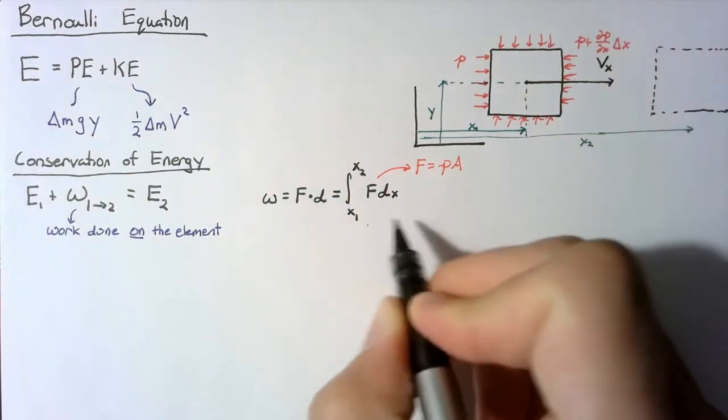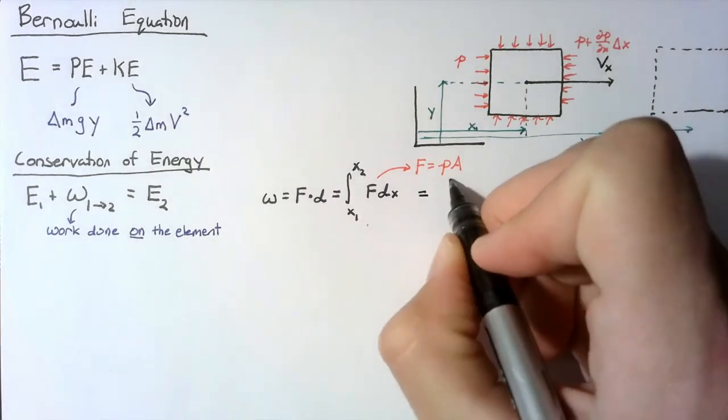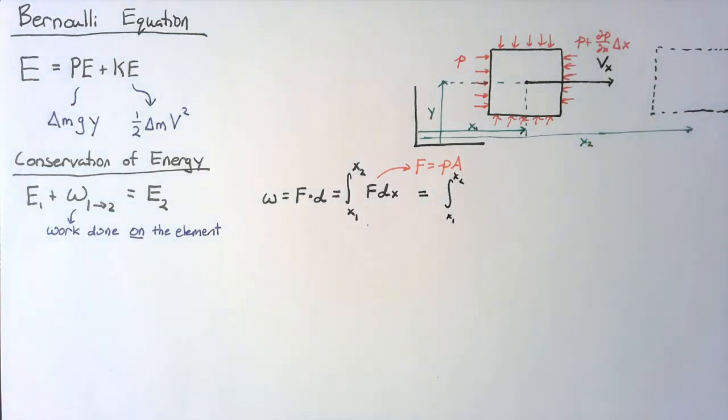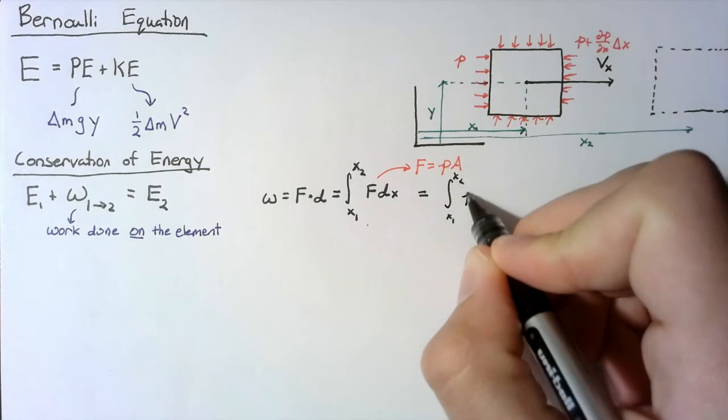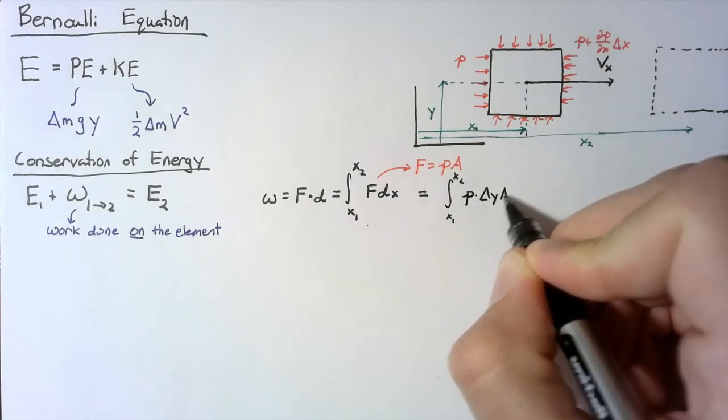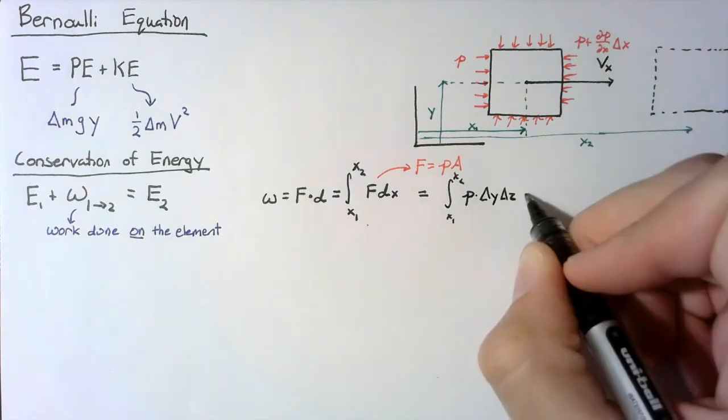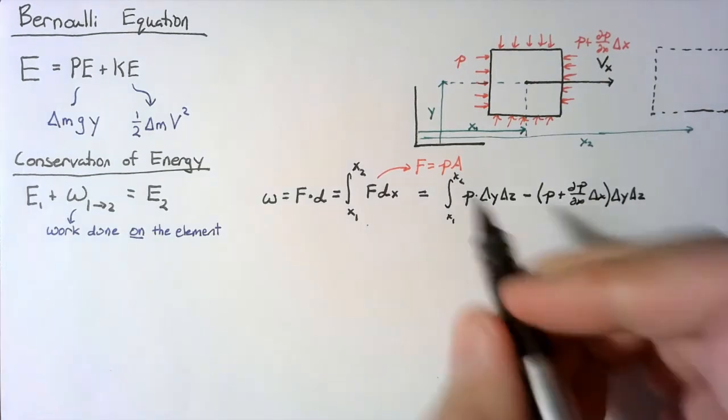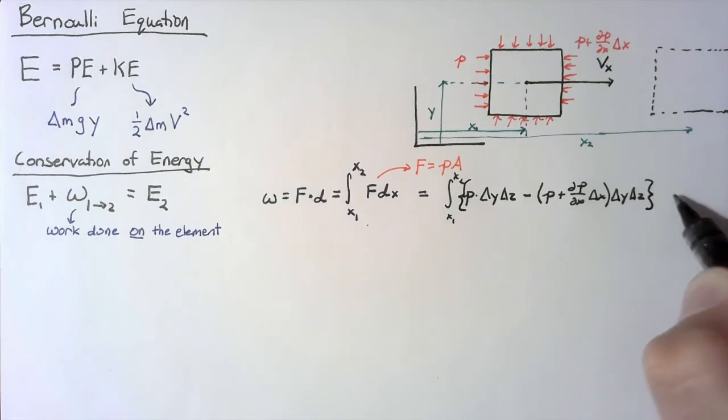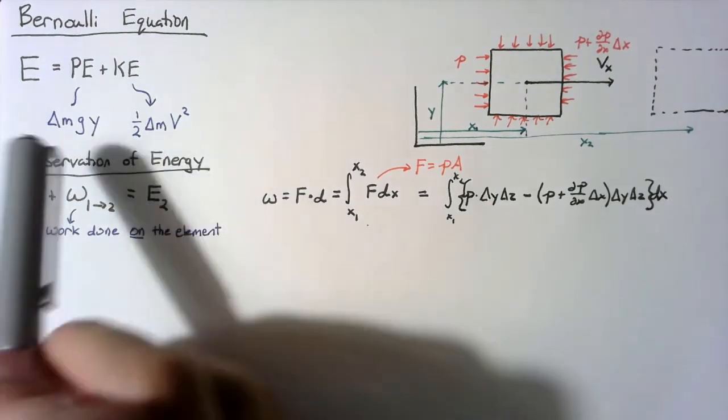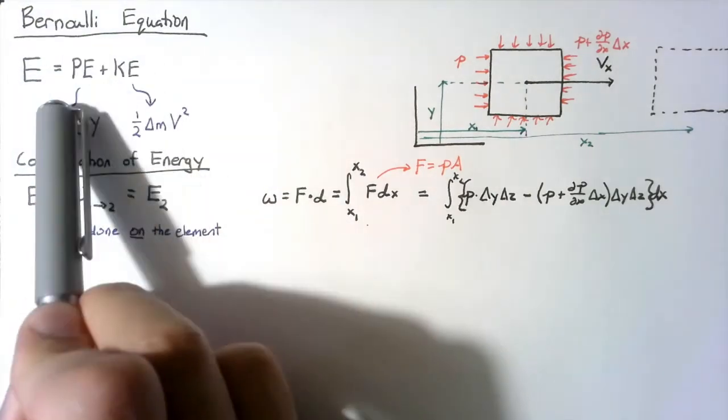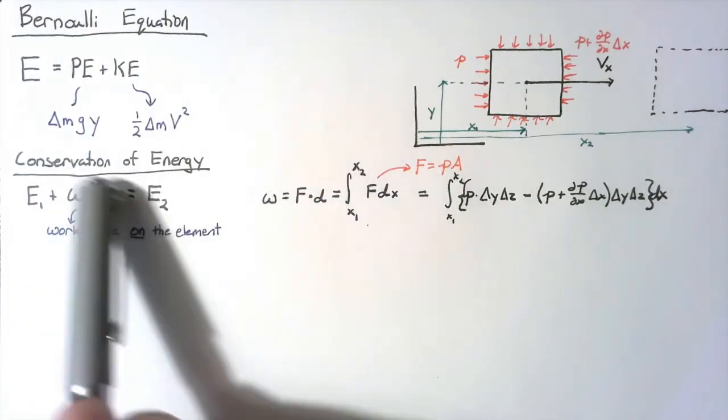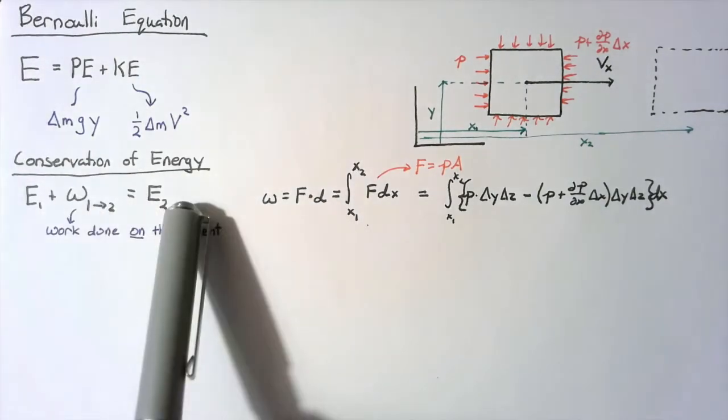So the total force here is going to end up being the integral from x1 to x2 of the pressure times delta y delta z minus this other pressure, again multiplied by delta y delta z. All of that integrated in x. So now we have defined what's going on with the potential energy, kinetic energy, and the work done. So we can write this out for both states.